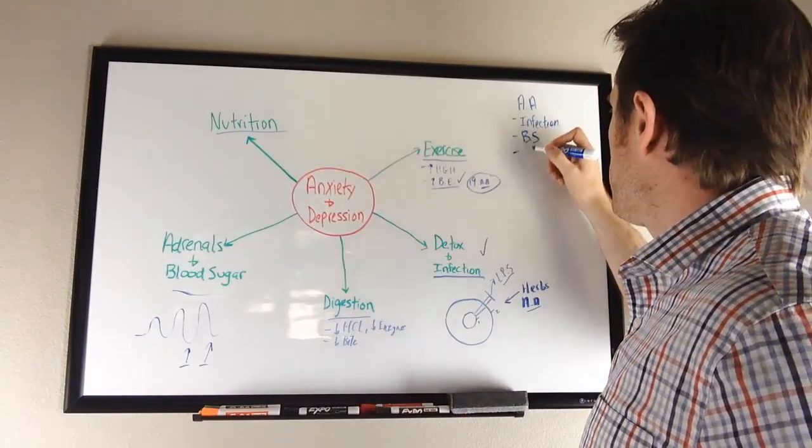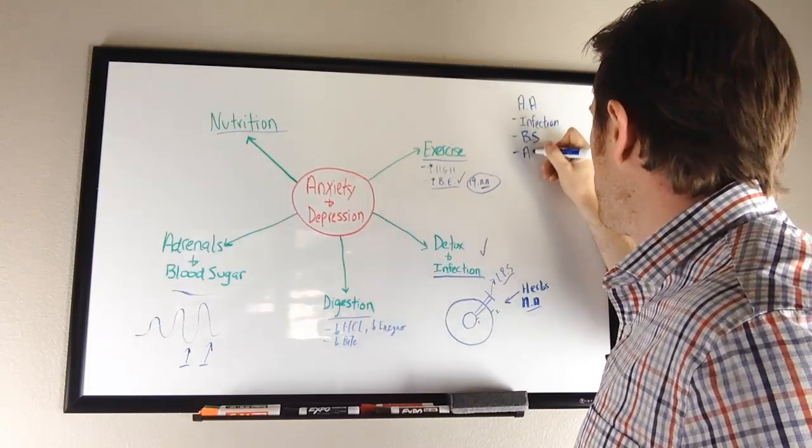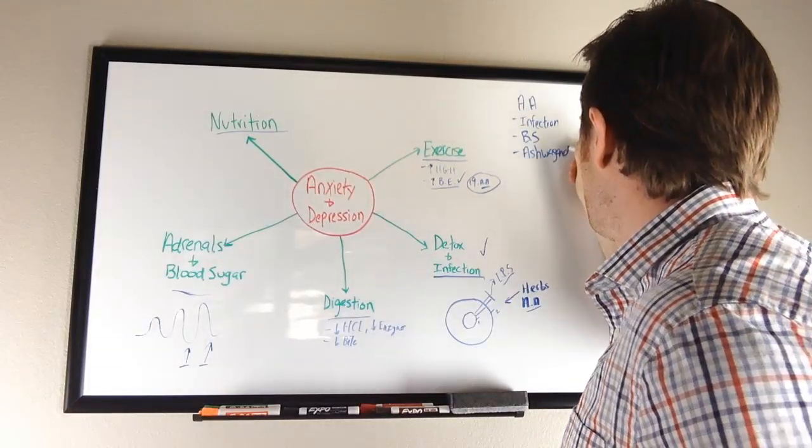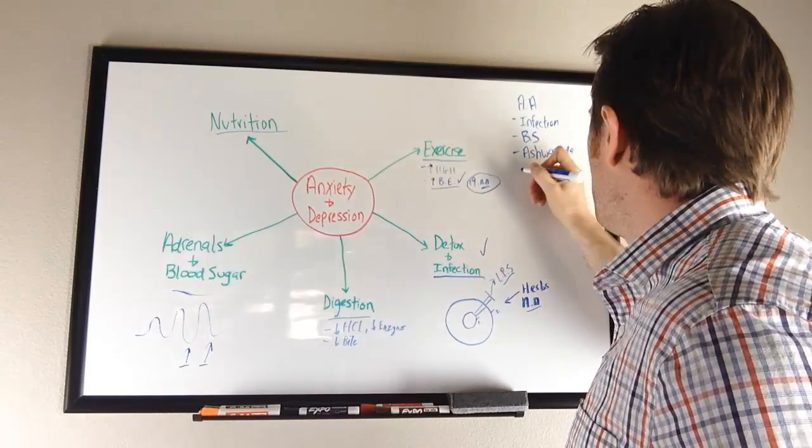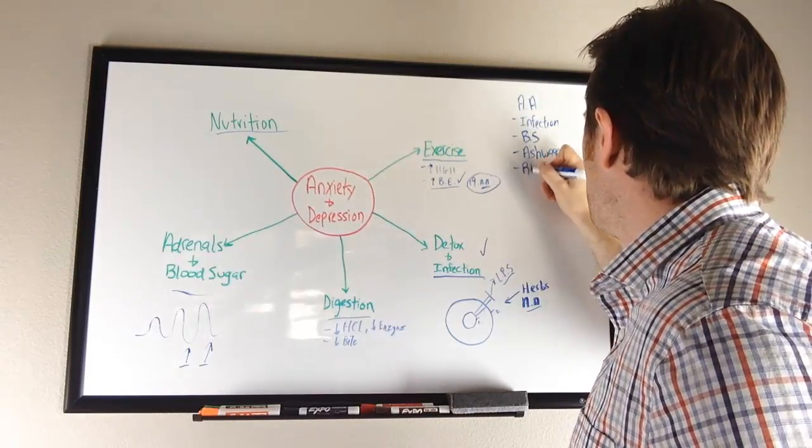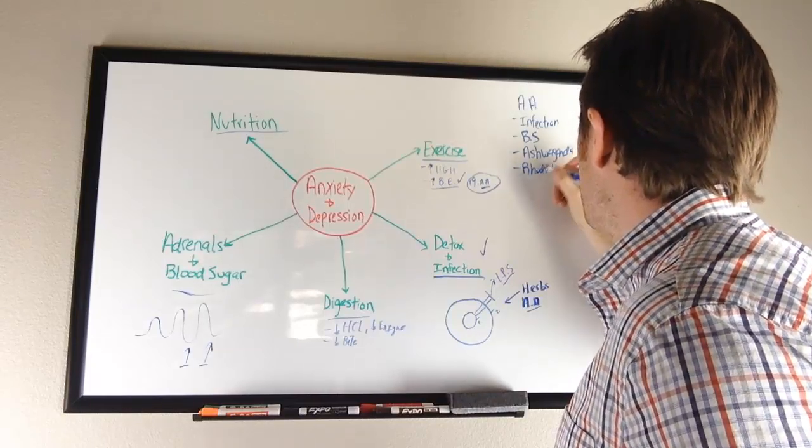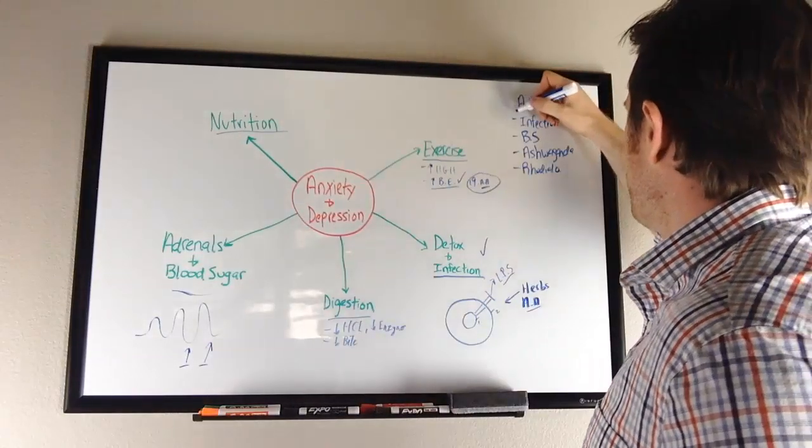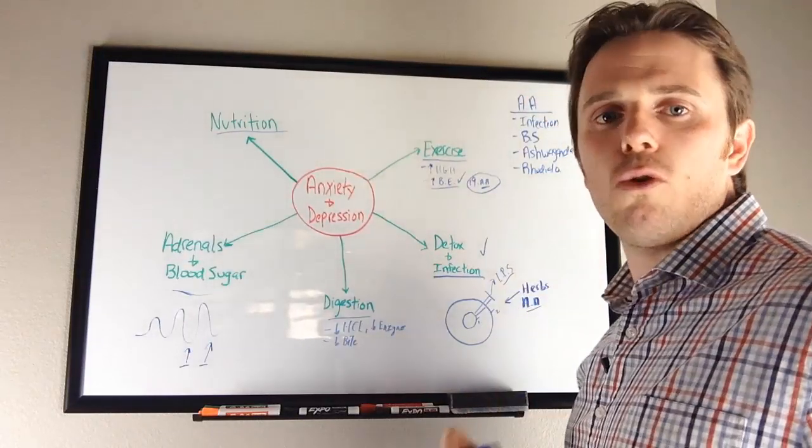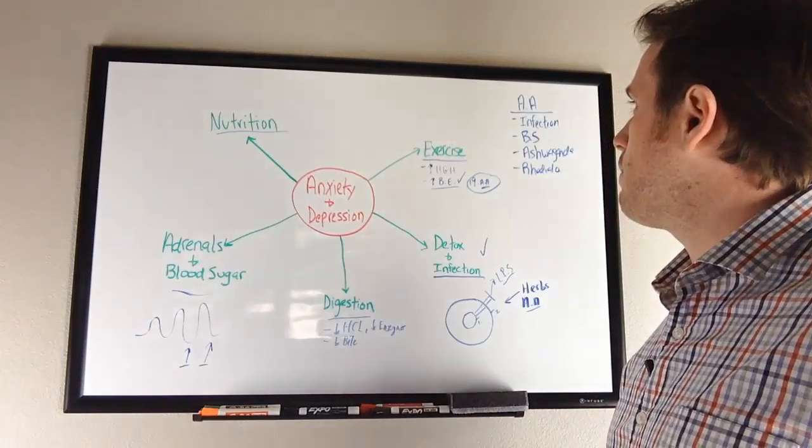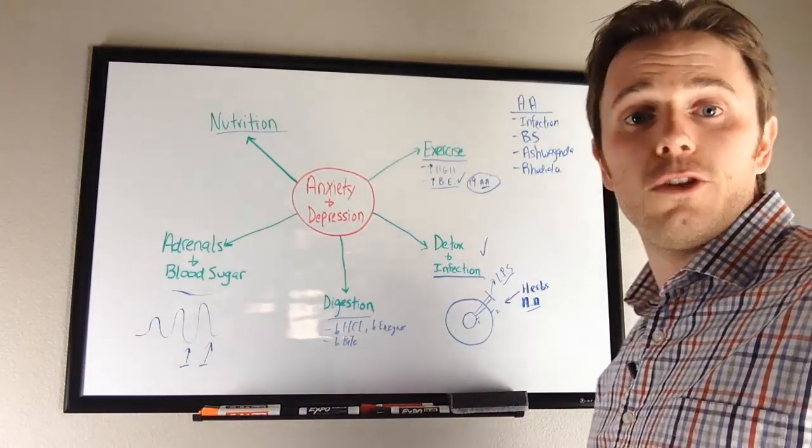Now supplements—there's some things that you can do as well. There are some adaptogenic herbs. One of my favorites are going to be ashwagandha and rhodiola. These are excellent herbs. Rhodiola—I spelled that wrong, but that's close enough. Again, these are your action items: ashwagandha, rhodiola, blood sugar, and getting the infection addressed are going to be really important things that you can do very simply.